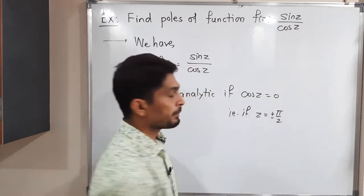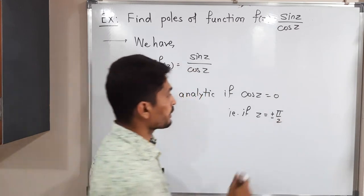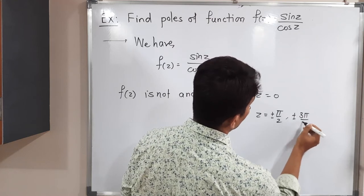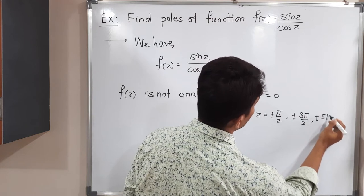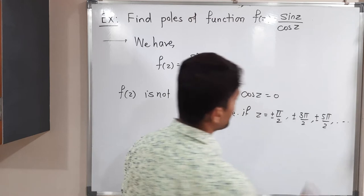If z is minus π/2, then also it will be zero. Or if it is plus minus 3π/2, then also cos will be zero. Or plus minus 5π/2, then also it will be zero.